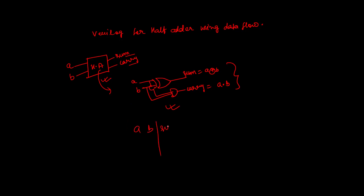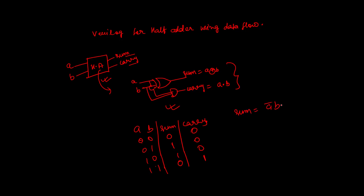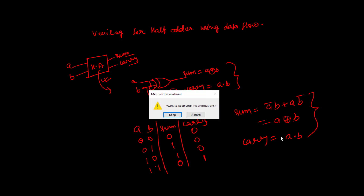Now let's also design the truth table to make it easier to understand. With two inputs, there are four combinations: 0,0 gives sum 0 carry 0; 0,1 gives sum 1 carry 0; 1,0 gives sum 1 carry 0; and 1,1 gives sum 0 carry 1. So sum equals A XOR B, and carry equals A AND B.